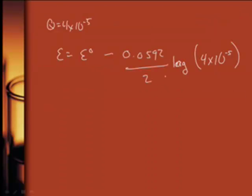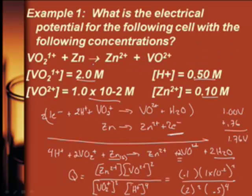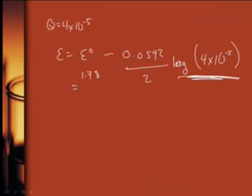So now we just plug it in, right? I would take the log of 4 times 10 to the minus 5. Do this first, guys. Times it by 0.0592. Actually, E naught, it was 1.78, right? Yeah, I think so. I'll double check. 1.76. So this would be 1.76 minus, and we'll figure out this entire term. What does it come out to be? The whole thing is negative 0.13. So it's 1.76 minus negative 0.13. And when you add that up, you get 1.89.